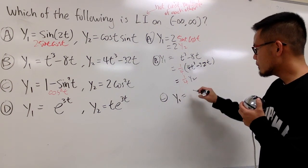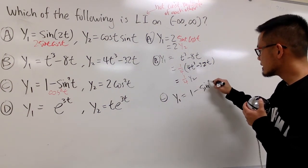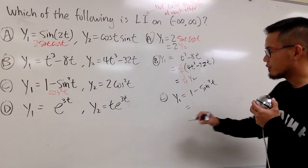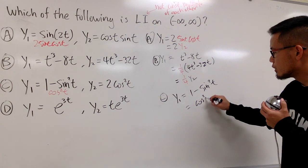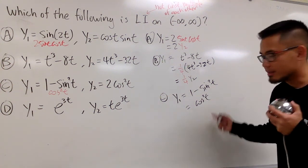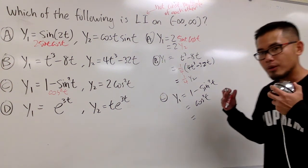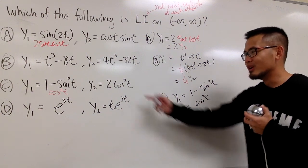y1 is 1 minus sine squared t, which I put down over there for you already, which is the same as cosine squared t. Trig identity.